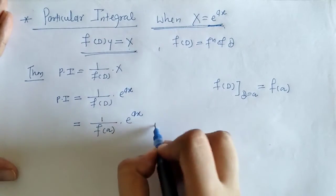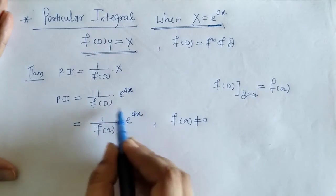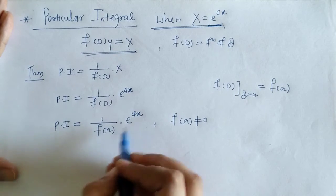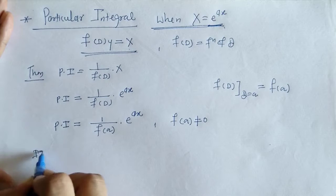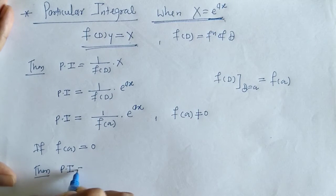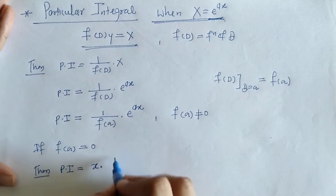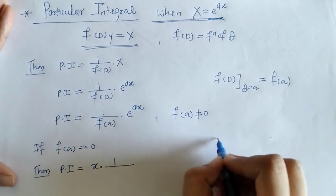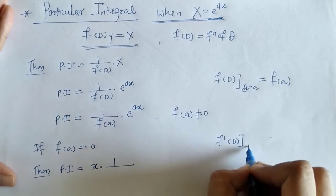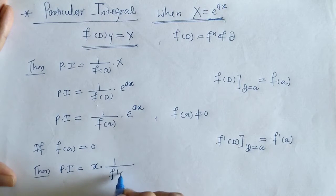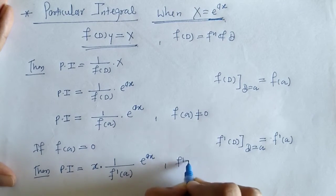The condition is that f(a) should not be equals to 0 — this denominator should not be 0. So this is the PI. When this denominator gets 0, what we have to do? We have to multiply by x and take the derivative of f(D) with respect to D. That derivative is f'(D), and next we put D equals to a, so we get f'(a) in the denominator.